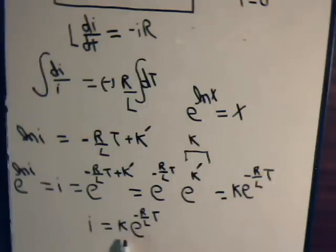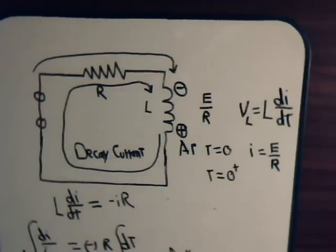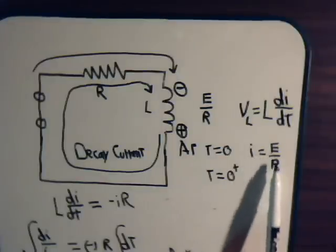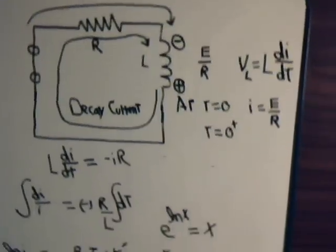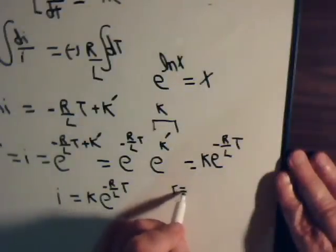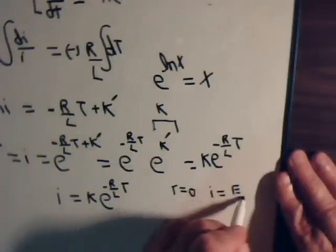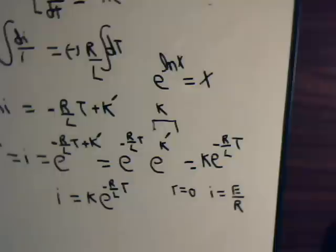Now k is a constant. If we use our initial conditions, we can find out exactly what kind of constant k is. Because we know that back here, just before we took the battery out at time t equals zero, the current flowing through the coil was just E over R. So let's make use of that. When t equals zero, I equals E over R.